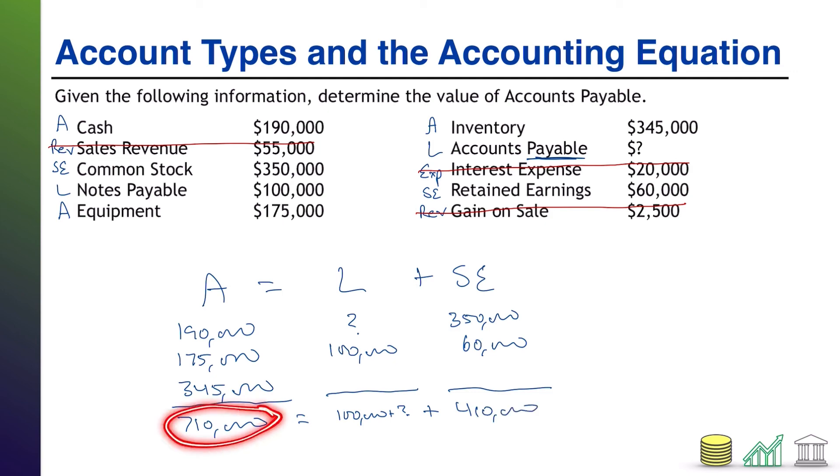Now check out our equation below. 710 equals 100 plus question mark plus 410. We can easily solve for the question mark at this point, right? So 710 equals question mark plus 510. And therefore, question mark equals $200,000. And that is going to be the value of our accounts payable following classifying each account into its account type and applying the basic accounting equation.